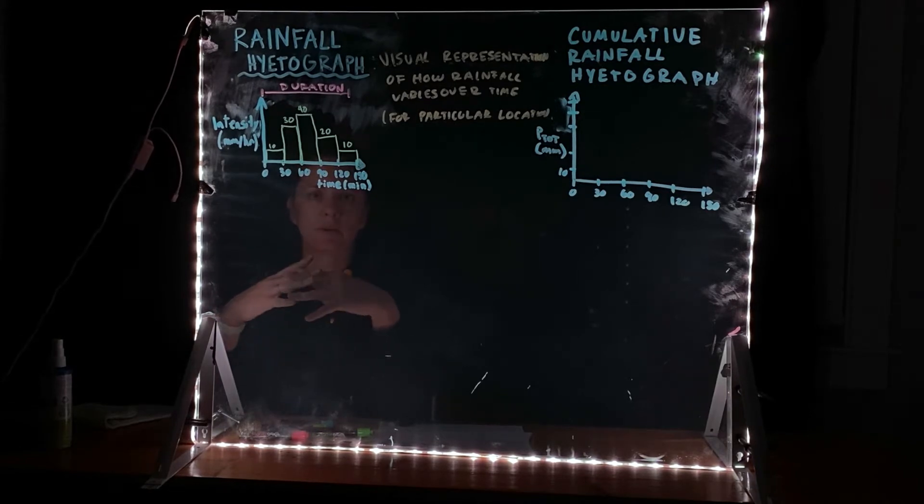So when we create and evaluate a rainfall hyetograph, we're looking at a snapshot of a certain particular location, space, and then it's how a particular storm is distributed over the duration or the time of the storm.